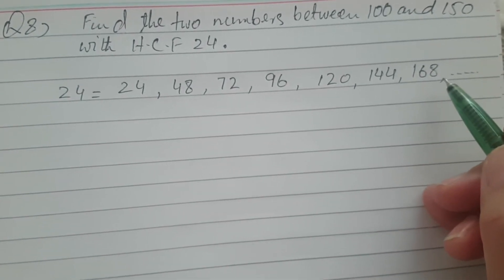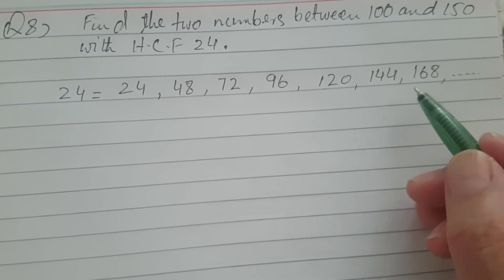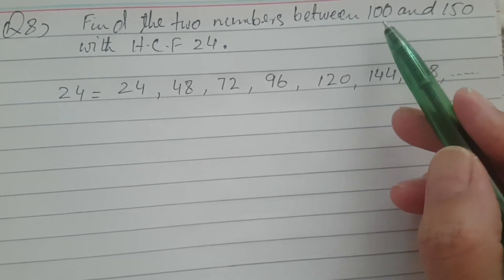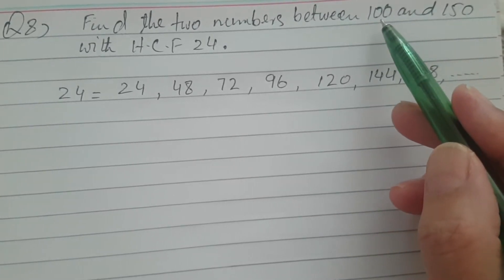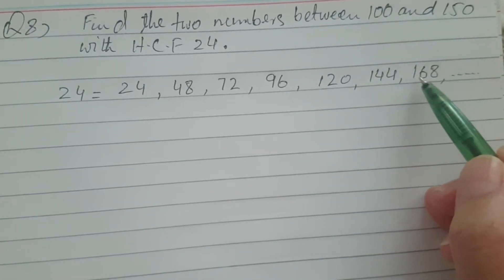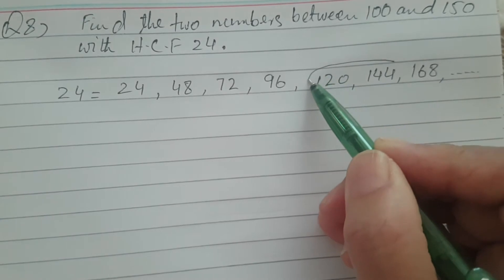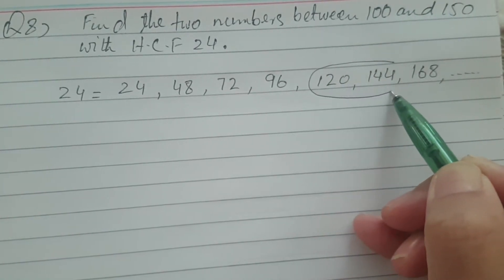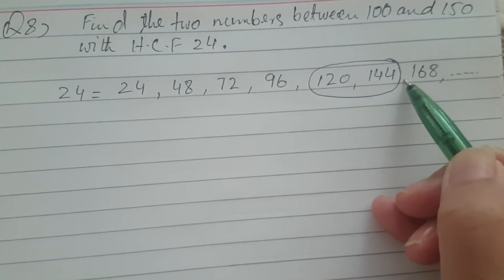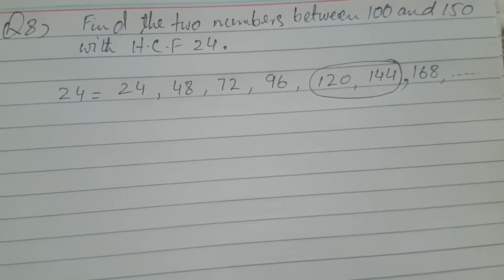I stopped the multiplication here because the question says between 100 and 150. Since 168 is greater than 150, the two multiples of 24 that fall between 100 and 150 are 120 and 144.